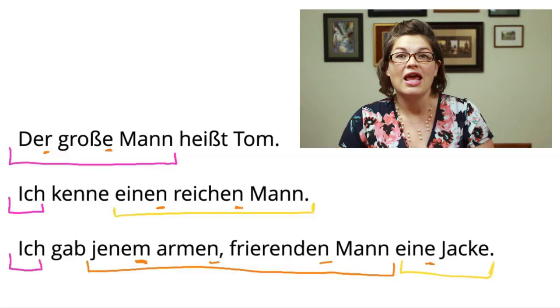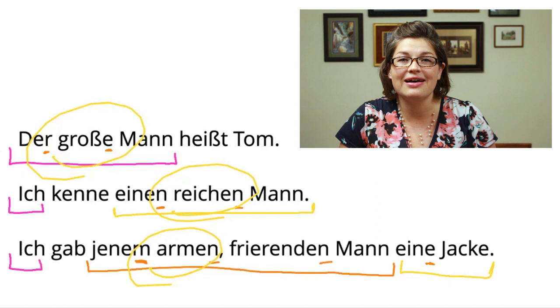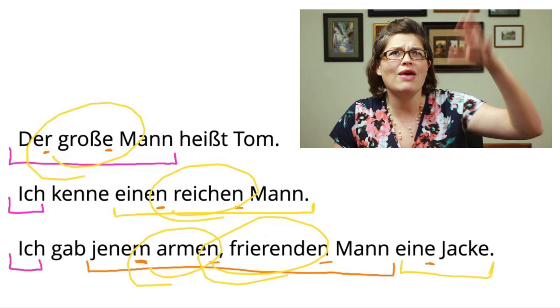The thing about declensions is that we are usually taught them using 10 or more different charts, which is really overwhelming. Everything gets spelled out: here's how you say 'the' in all the different ways in German, here's 'a' in all the different ways, and these are the declensions to put on adjectives like 'groß,' 'reich,' or 'am frierend.' You have strong endings, weak endings, and mixed endings. It is so confusing — but the good news is there is an easier way.